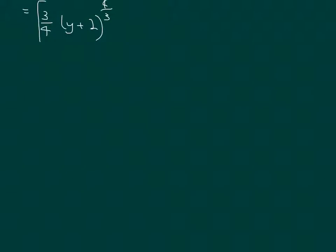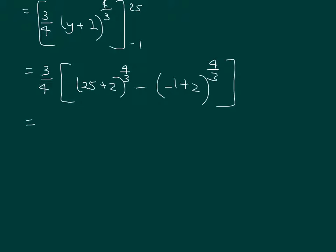And that's in brackets from 2.5 down to minus 1. So take 3 quarters out the front and make your arithmetic easier. So it's 2.5 plus 2 to the 4 on 3, minus minus 1 plus 2 to the 4 on 3.